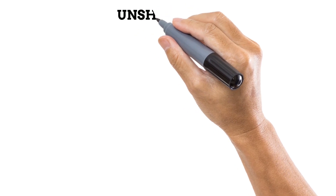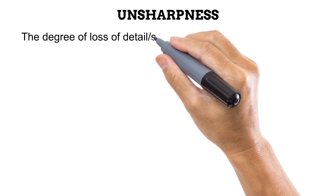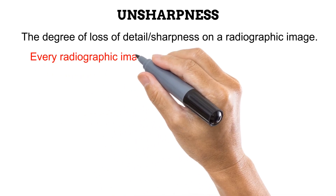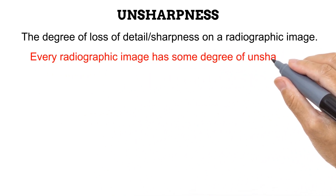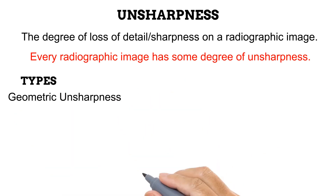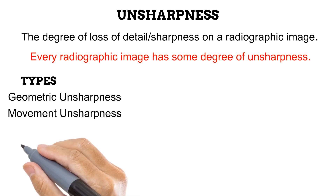Before we go any further, we need to understand the term unsharpness. Unsharpness is the opposite of recorded detail or sharpness — it is the degree of loss of detail or sharpness present on a radiographic image. Take note that every radiographic image has some degree of unsharpness. There are three common types: geometric, movement, and photographic unsharpness.